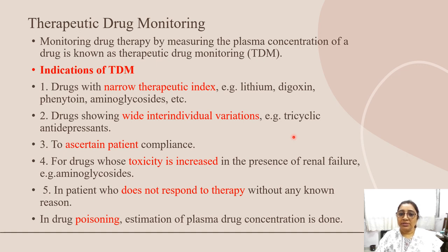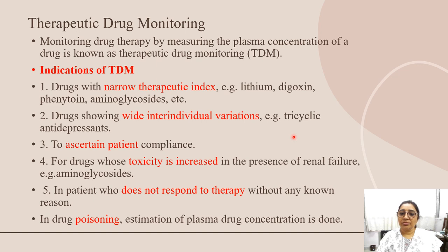TDM is also used to ascertain patient compliance — to determine if the patient is taking their medicine or not, we can check the plasma concentration of the drug. Additionally, for drugs whose toxicity increases in the presence of renal failure, like aminoglycosides, if a patient has renal failure there is a risk of drug toxicity, so we check the plasma concentration of those drugs.